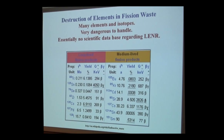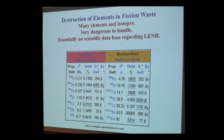Let's go to the flip side: the destruction of fission waste. This is a table from Wikipedia of long-lived and medium-lived fission elements — that's what we'd like to get rid of. A question right away: what if you can do cesium-135 but not cesium-137? Cesium-137 is a problem. We have no database yet on the ability to transmute these elements using LENR. And I'm not talking about using LENR to make neutrons to induce nuclear reactions — I'm talking about having the radioactive fission products participate directly in the LENR reactions.